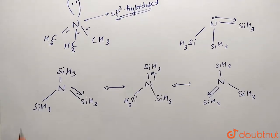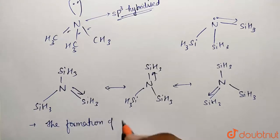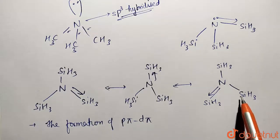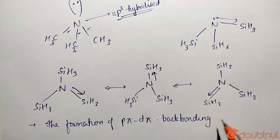So what is the reason for that? We can write the formation of p-pi d-pi. So p-pi from nitrogen and d-pi from silicon are involved in back bonding. Back bonding makes the geometry planar.